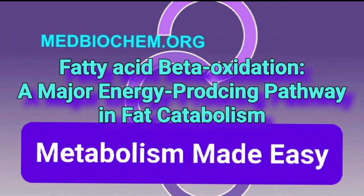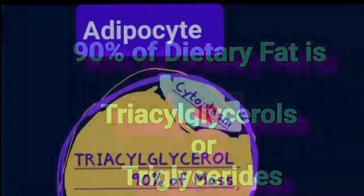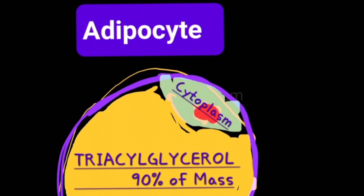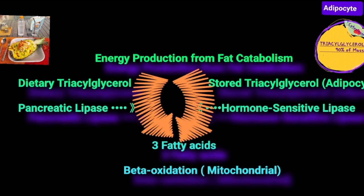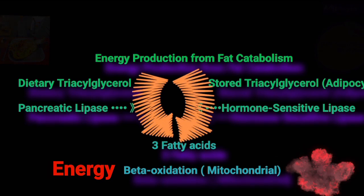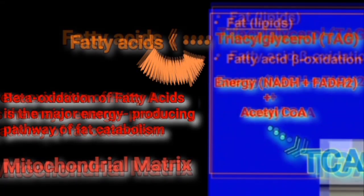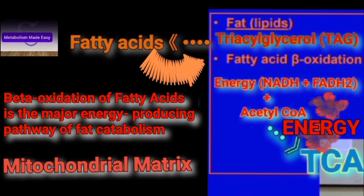Almost 90% of our dietary fat intake is in the form of triglyceride or triacylglycerol, and 90% of our stored fat in adipocytes is triacylglycerol. Beta oxidation of fatty acids is the major catabolic pathway that produces energy from dietary or stored triacylglycerol. Fat in the diet — which is TAGs — you break down the TAGs, you get fatty acids, and fatty acid beta oxidation produces energy as well as acetyl-CoA. Acetyl-CoA can enter the TCA cycle and give you more energy.